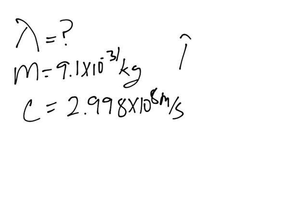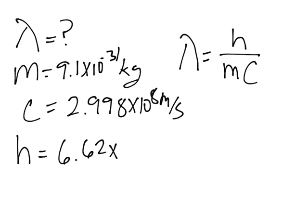We know wavelength will be equal to h over MC. We have M, we have C. And Planck's constant is simply 6.62 times 10 to the negative 34 joules times second.